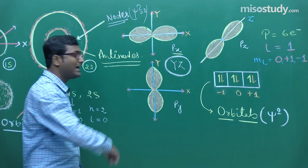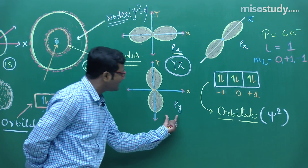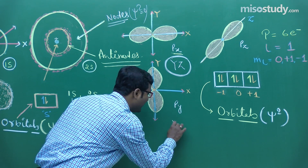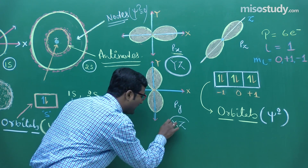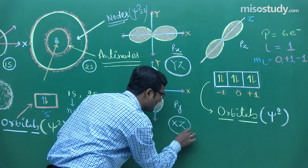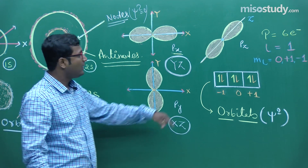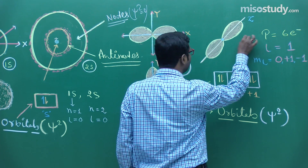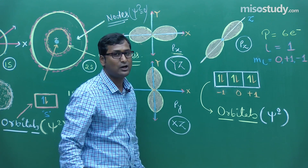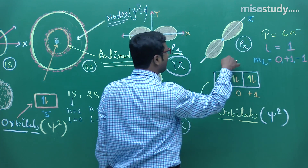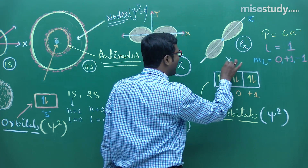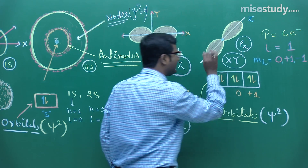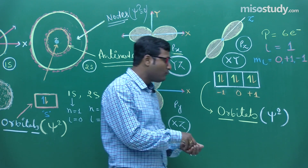For py, the y-axis has maximum electron density, so the xz-plane is the nodal plane. For pz, the z-axis has maximum electron density, so the xy-plane is the nodal plane.